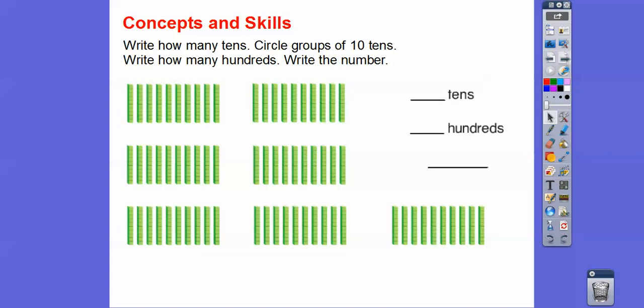So write how many tens, circle groups of tens, and write how many hundreds, and write the number. How many tens are here? Each one of these is a ten. Here's one ten, two ten, three, four, five, six, seven, eight, nine, ten. So it looks like these are all in tens. Here's ten tens, here's another ten tens. So that would be ten and ten is 20, plus ten more is 30, plus ten more is 40, 50, 60. Looks like there's 70 of these ten strips right here.